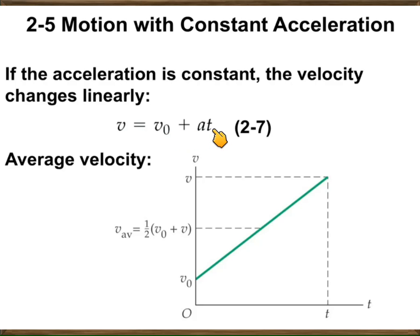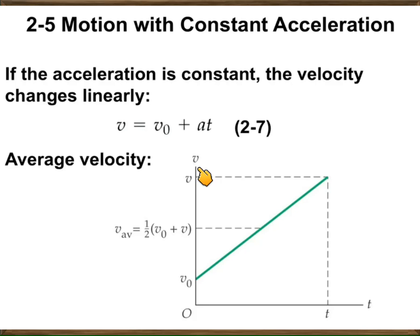Your velocity increases with this multiplication of the acceleration with time. If you check the v versus time graph of this constant velocity motion, you will see a straight line. But this is not a position versus time graph — this is a velocity versus time graph. The position versus time graph is not a straight line curve in the case of constant accelerated motion.